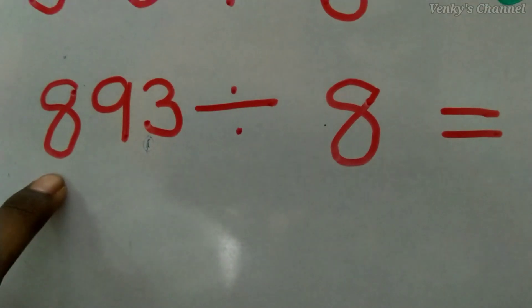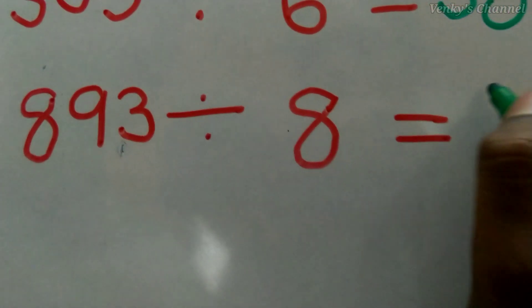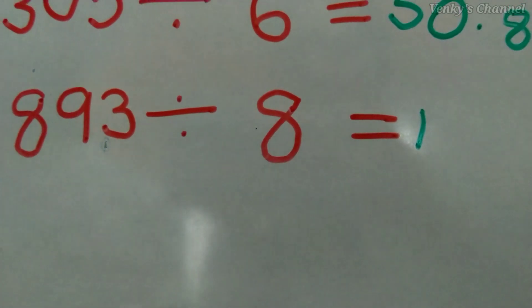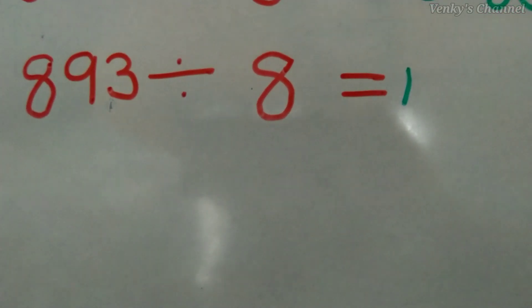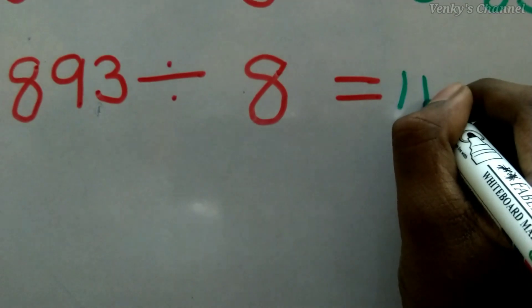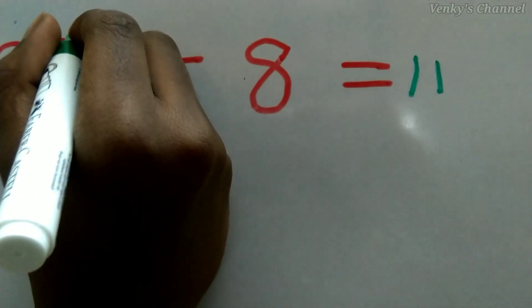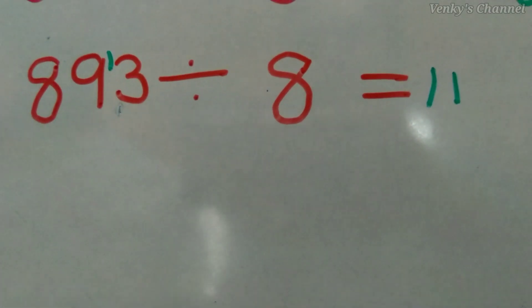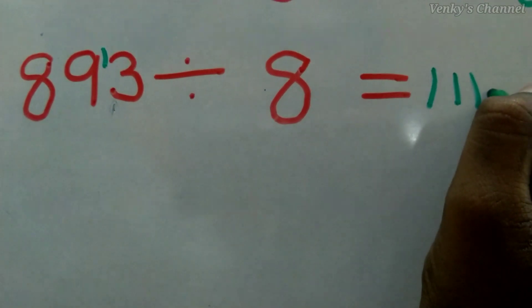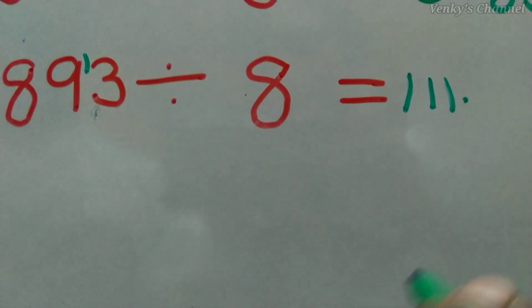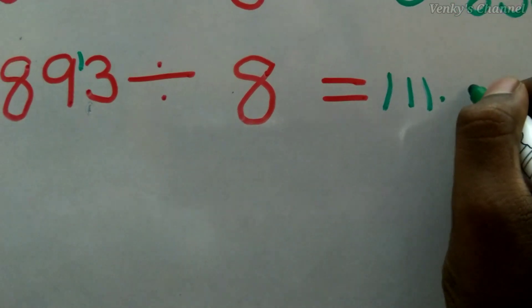Now let's do 893 ÷ 8. The first digit is 8, equal to 8, so we can use it. 8 × 1 = 8, no remainder. Next digit is 9, which is greater than 8. 8 × 1 = 8, remainder 1 — write 1 beside the third digit, making 13. 8 × 1 = 8, remainder 5. We keep a decimal point, and putting a 0 beside 5 makes it 50. 8 × 6 = 48.